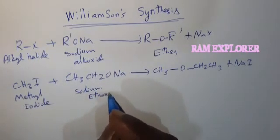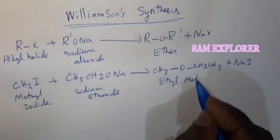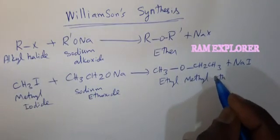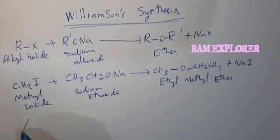In our example, methyl iodide reacts with sodium ethoxide to give ethyl methyl ether.